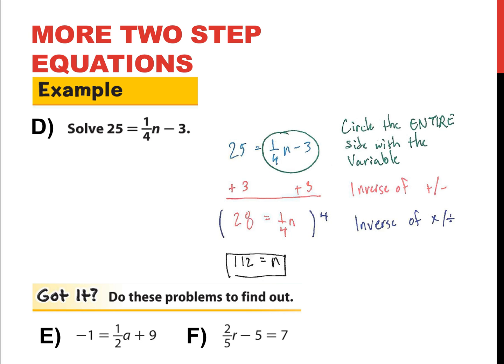Go ahead and do examples E and F on your own the same way that I did example D. Make sure to mind your signs when adding and subtracting with integers. Negative 1 equals 1 half times a plus 9 is example E. That's negative 1 is equal to 1 half a plus 9. And example F to work out is 2 fifths times r minus 5 equals 7. That's 2 fifths times r minus 5 is equal to 7. And that is example F. Go ahead and work those two examples out the same way that I did example D. And I'll be here when you get back.